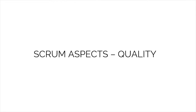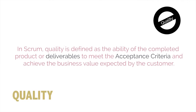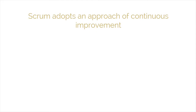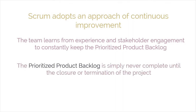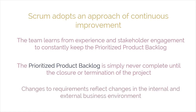Quality is the third aspect we are going to discuss. In Scrum, quality is defined as the ability of the completed product or deliverables to meet the acceptance criteria and achieve the business value expected by the customer. To ensure that a project meets its quality requirements, Scrum adopts an approach of continuous improvement, whereby the team learns from experience and stakeholder engagement to constantly keep the prioritized product backlog updated with any changes in requirements. The prioritized product backlog is never complete until the closure or termination of the project.